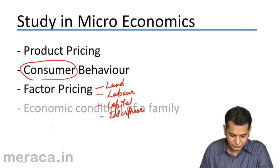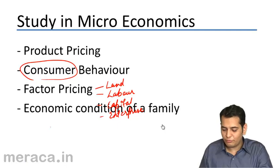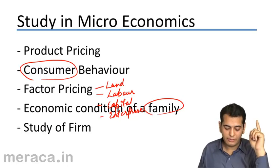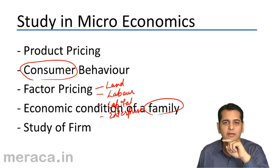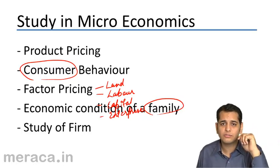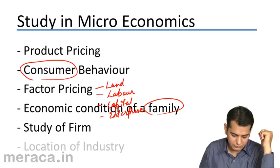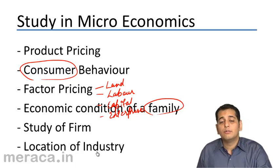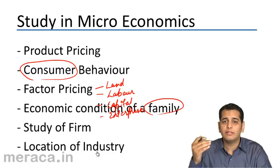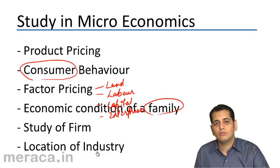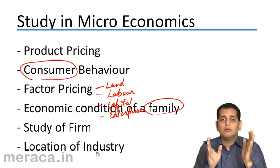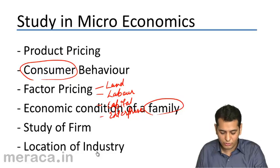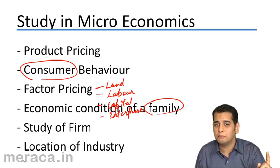Other microeconomic concepts include the economic condition of a family — since we are studying the economic condition of a single family, it is a microeconomic concept. Study of a firm as a single unit. Location of industry — where do we locate or build an industry? Whether we build it in Maharashtra or elsewhere — when we think of building a factory or company, it is a microeconomic concept because it relates to a single, particular unit.